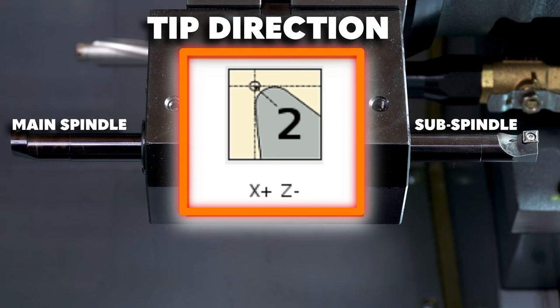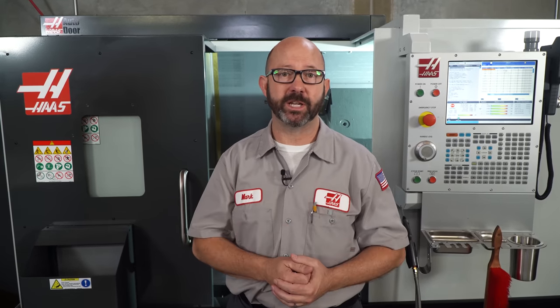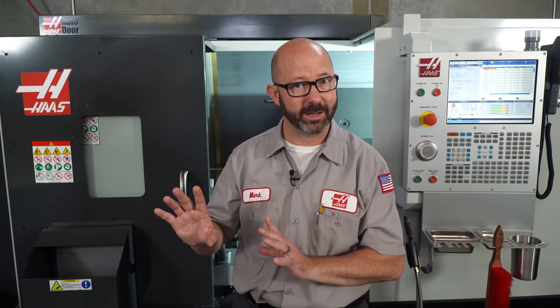Likewise, we'll keep that tip direction of two on our sub-spindle boring bar because of our G14 mirroring. So we're going to be reversing our tip directions from what we might normally do with all of our G14 tools, especially if you're a hand programmer using tool nose radius compensations. So tip direction of three stays a three, just like the main. Tip direction of two stays two, just like on the main. This is how we program parts on our sub-spindle.